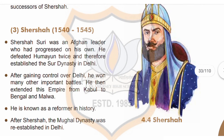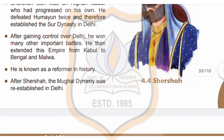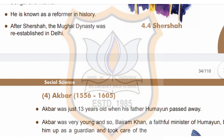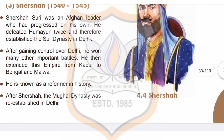Next topic is Shersha, period 1540 to 1545. Shersha Suri was an Afghan leader who had progressed on his own. He defeated Humayun twice and therefore established the Sur dynasty in Delhi. After gaining control over Delhi, he won many other important battles. He then extended this empire from Kabul to Bengal and Malwa. He is known as the reformer in history. After Shersha, the Mughal dynasty was re-established in Delhi. Children, you can see picture 4.4 of Shersha.